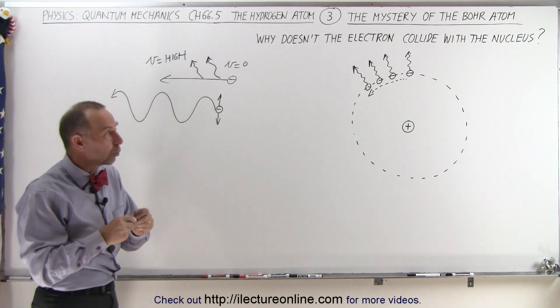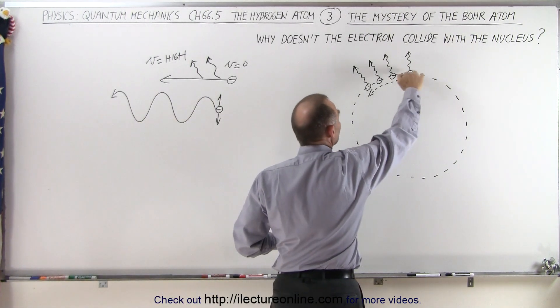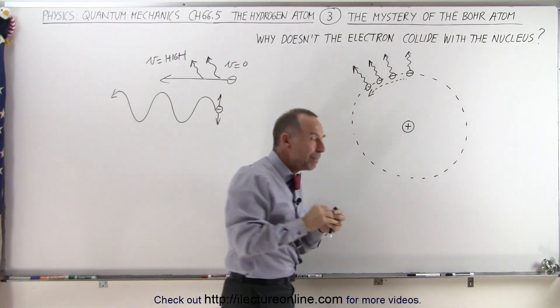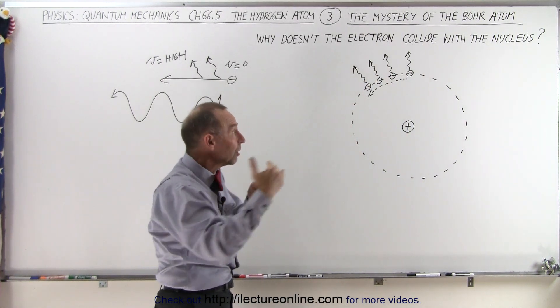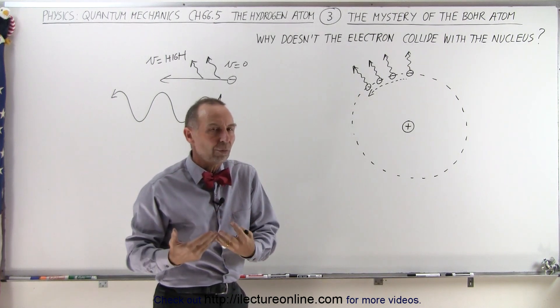And it is no different for a charge that goes around in a circular path, because as an electron is going around in a circle, it may not be changing its velocity, but it's certainly changing its direction, and a change in direction is also acceleration.